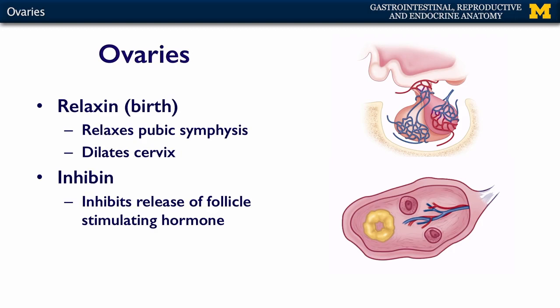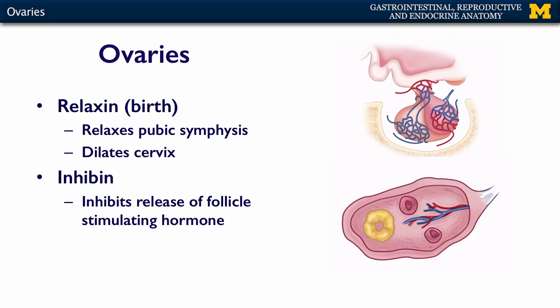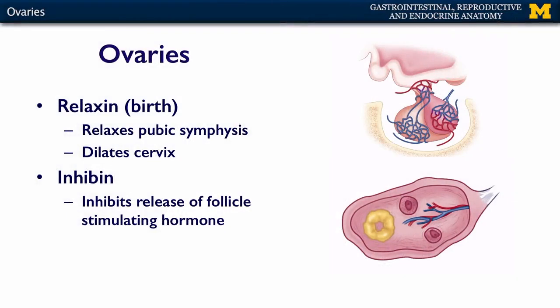The other two hormones secreted by the ovaries are relaxin and inhibin. Relaxin is secreted during the birth process and helps loosen the pubic symphysis to allow the pelvis to open slightly, letting the baby exit more comfortably. It also helps dilate the cervix to allow the baby to be born. Inhibin, secreted by the ovary, inhibits the release of follicle-stimulating hormone from the pituitary.